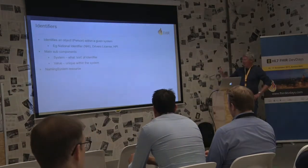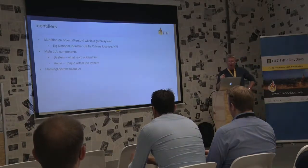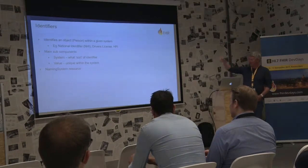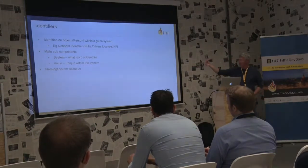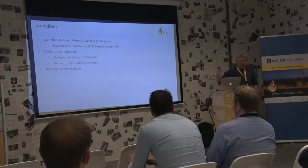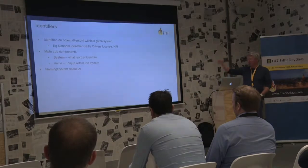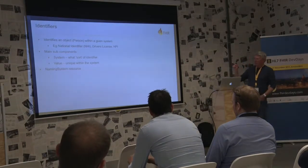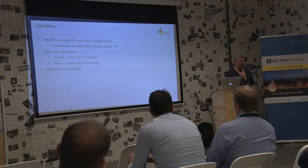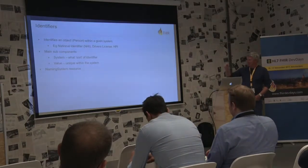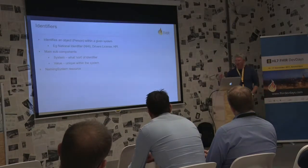Identifiers are worth discussing. An identifier is where you're identifying an object — like a patient — within a given system. Examples include a national identifier or driver's license. An identifier has two subcomponents: the system (where it comes from, such as 'New Zealand national identifier') and the value, which is unique within that system. This is worth knowing about because it's profiled very commonly — most jurisdictions will have a patient identifier and will specify what the system should be.